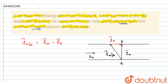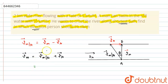We have to find the direction. Let it make the angle theta, as shown in the figure. If we take the velocity of man equals velocity of man with respect to river plus velocity of river, we can write the velocity of man with respect to river in two components: one along the x direction and another along the y direction.